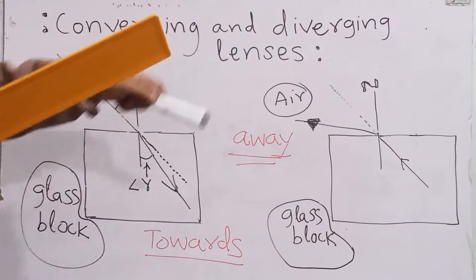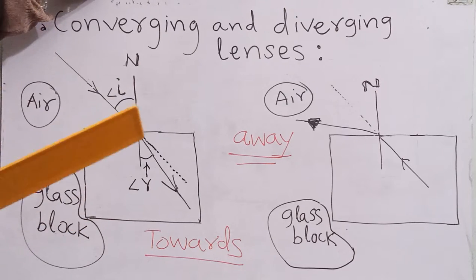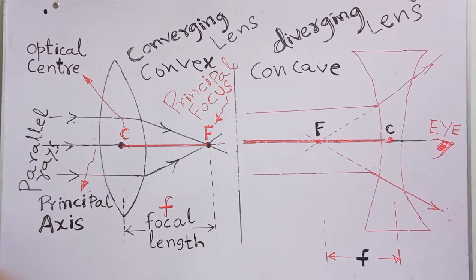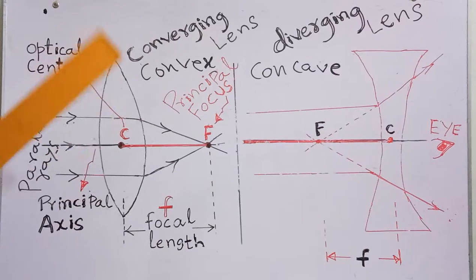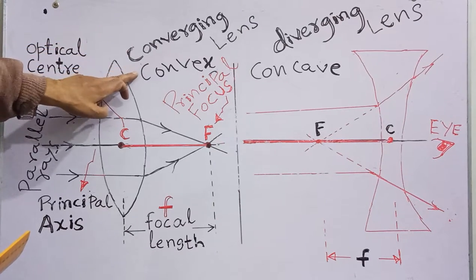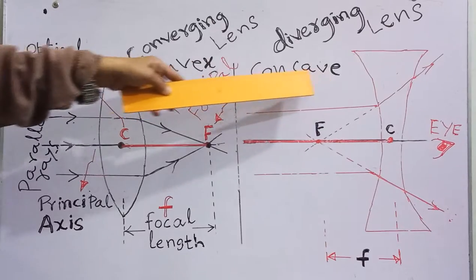Keeping these two fundamental properties in mind, we come to the main topic, which is the commonly used terms related to converging and diverging lenses. In this topic, we will define the optical center of the lens, the principal focus, the principal axis, and the focal length. It must be noted that a converging lens is also called a convex lens. Similarly, a diverging lens is also called a concave lens.